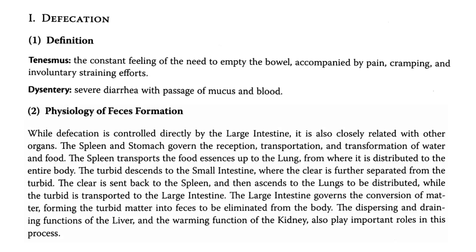The spleen and stomach govern the reception, transportation, and transformation of water and food. The spleen transports the food essences up to the lung from where it is distributed to the entire body. The turbid descends to the small intestine where the clear is further separated from the turbid. The clear is sent back to the spleen and then descends to the lung to be distributed, while the turbid is transported to the large intestine. The large intestine governs the conversion of matter, forming the turbid matter into feces to be eliminated from the body. The dispersing and draining functions of the liver and the warming function of the kidney also play important roles in this process.